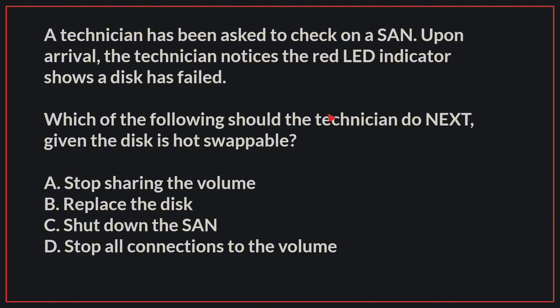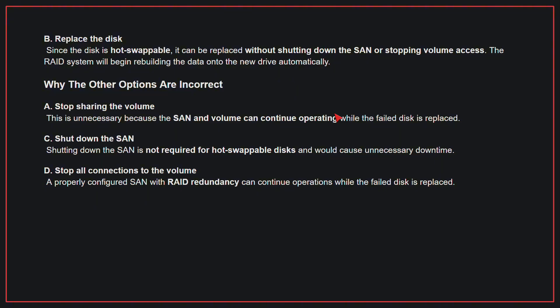A technician has been asked to check on a SAN. Upon arrival, the technician notices the red LED indicator shows a disk has failed. Which of the following should the technician do next, given the disk is hot-swappable? The correct answer is B, replace the disk. Since the disk is hot-swappable, it can be replaced without shutting down the SAN or stopping volume access. The RAID system will begin rebuilding the data onto the new drive automatically.